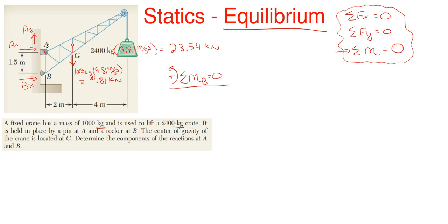So Ay is technically right here and it passes right through point B. It has no perpendicular distance to point B so it would be times zero. A sub x does have a perpendicular distance and it is 1.5 meters. The way I have it assumed it will be rotating clockwise about point B, so it would be minus Ax times 1.5 meters.